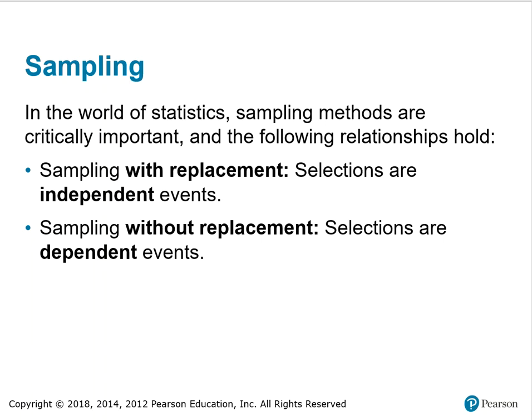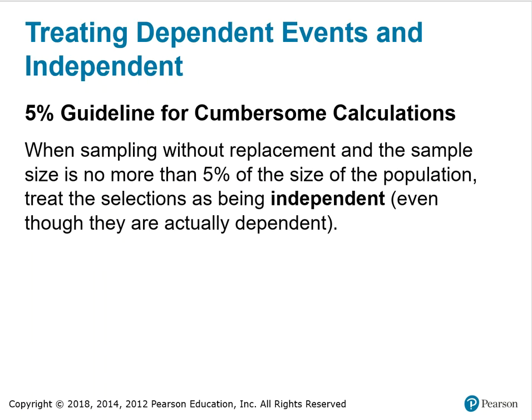I never did answer that question from the previous problems, but this will answer those questions for you. Sampling without replacement: the selections are dependent events. There is a 5% guideline for cumbersome calculations. When sampling without replacement and the sample size is no more than 5% of the size of the population, treat the selections as being independent, even though they're actually dependent.